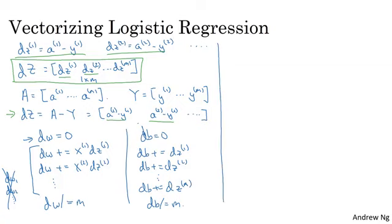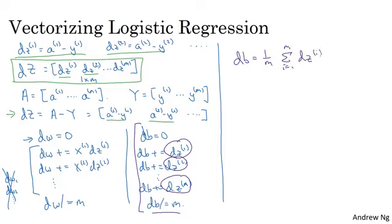Here's what we can do. For the vectorized implementation of db, what it's doing is basically summing up all of these dzs, and then dividing by m. So db is basically 1 over m, sum from i equals 1 through m of dzi, where all the dzs are in that row vector. And so in Python, what you do is implement 1 over m times np.sum of dZ. Just take this variable and call the np.sum function on it, and that will give you db.